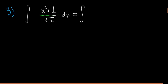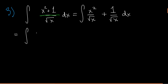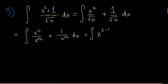Remember: if you divide two things added together by a common factor, you can split them up and divide each part separately. So we split it into x squared over square root of x plus 1 over square root of x. The square root of x is x to the one-half, so x squared divided by x to the one-half gives x to the two minus one-half, which is x to the three-halves. And 1 over x to the one-half is x to the negative one-half.